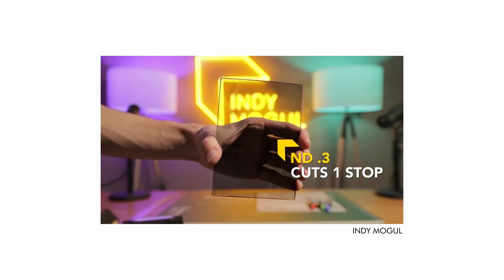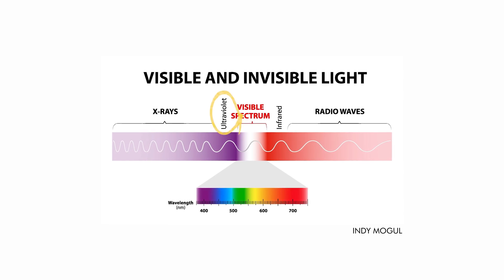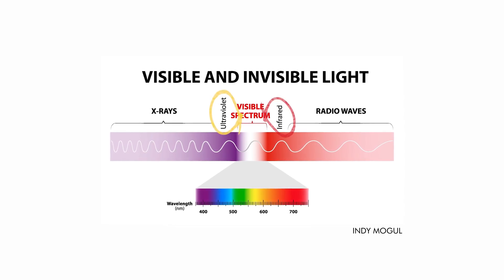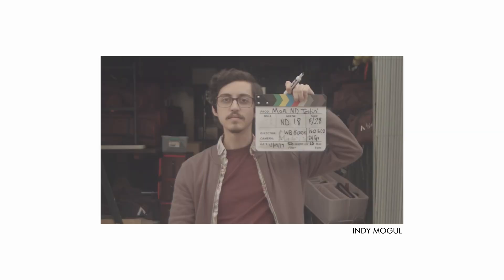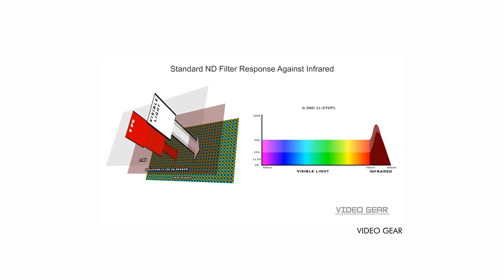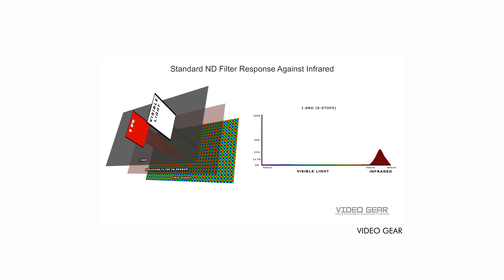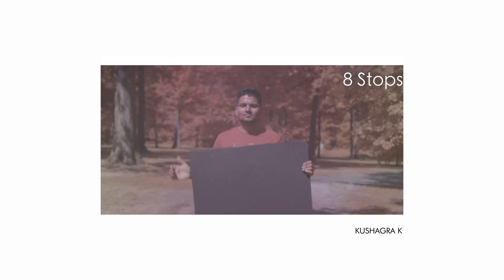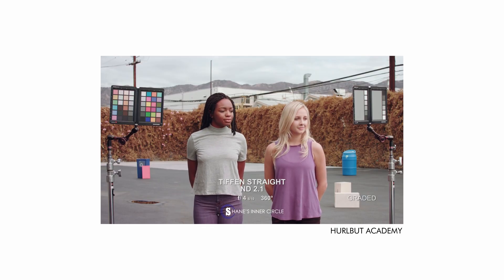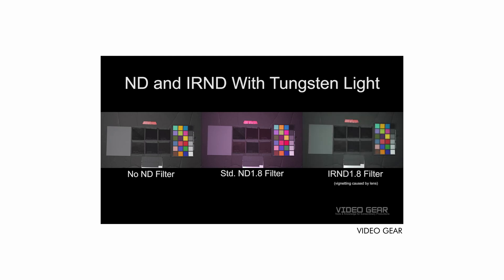Not all NDs are created equal. Older NDs only decrease light in the visible spectrum, but considering the advent of digital technology we must now be aware of infrared light. Infrared is invisible to our eyes but camera sensors are very sensitive to these wavelengths. As regular NDs block more light, most of the infrared light is passed through, giving a deep magenta cast — especially to objects with a darker tonal value such as black. This is called IR pollution. As the amount of visible light decreases, it also emphasizes the infrared. This is where IR NDs come into play.